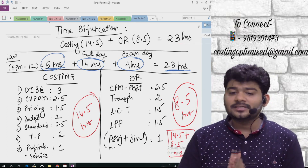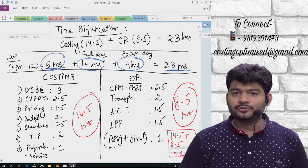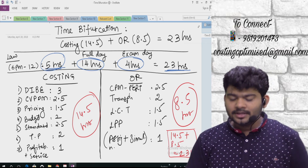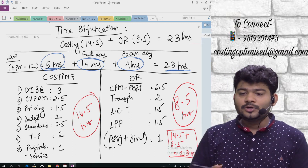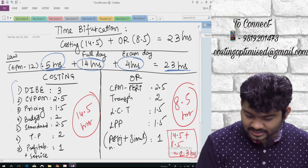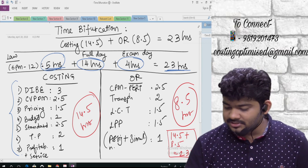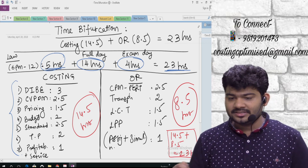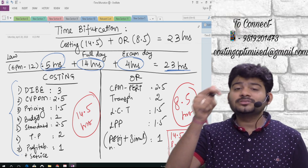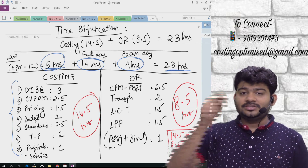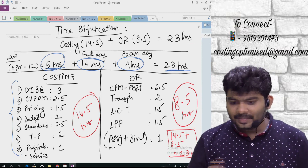The next full day, assuming you wake up at 5:30 in the morning and study the full day, that gives you 14 hours. And on exam day, from 7 to 11 in the morning — a conservative 4 hours after deducting 1 hour break. So total works out to 23 hours. In these 23 hours, you need to complete everything in a structured way. I have written it topic by topic and hour by hour. Please write it down along with me.